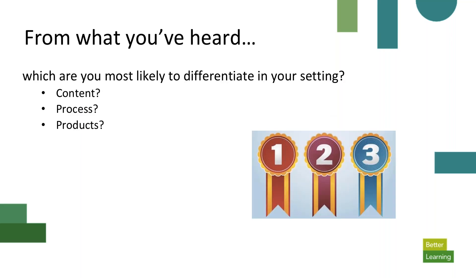Based on what you've heard, which are you most likely to differentiate in your setting? The content — the topics and themes you're covering — the process, or the ways you implement your curriculum and conduct instruction, or the products — the final outcomes. Which of these three seem most feasible in your settings?